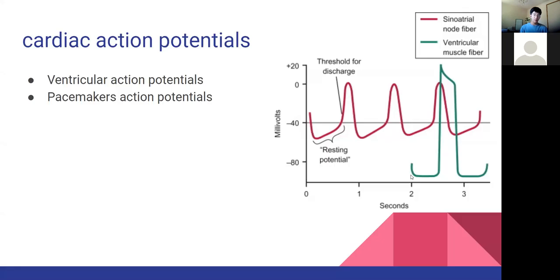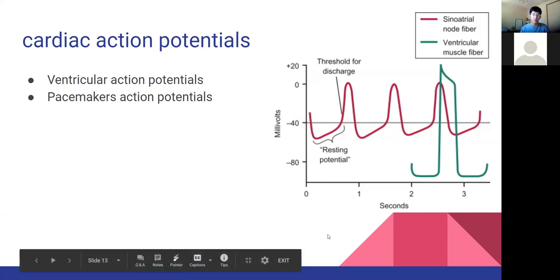In terms of electrical conduction, it's fairly complicated. We have two types of cells: pacemakers, which constantly and spontaneously trigger an action potential, whereas ventricular action potentials don't occur spontaneously - they're characterized by these green action potentials. Ramya would have talked about this in her lecture a couple of days ago, so we won't be going through this one today.